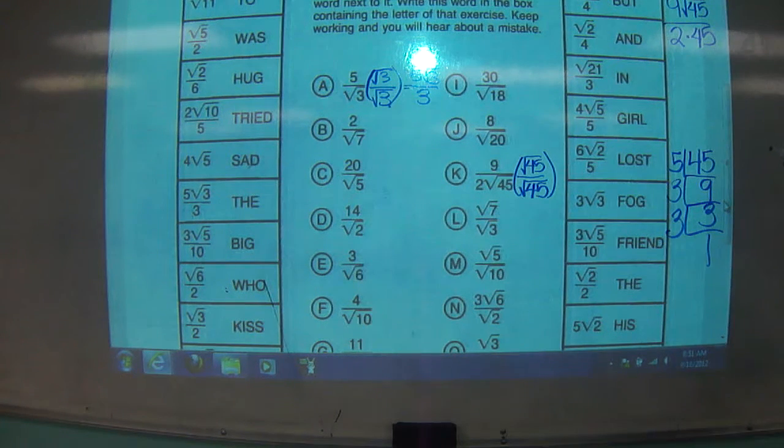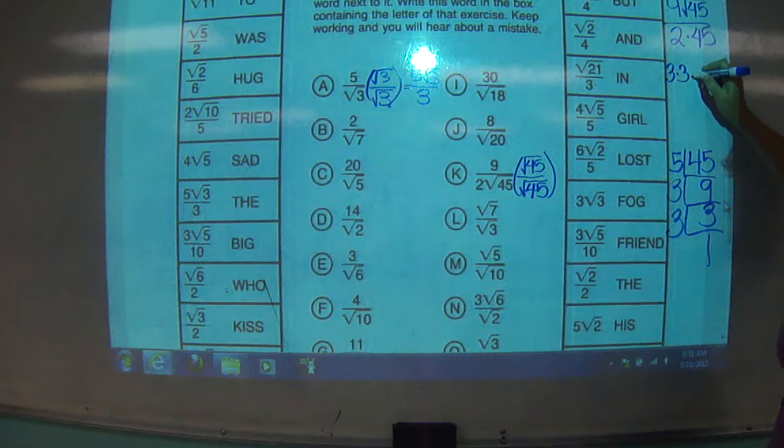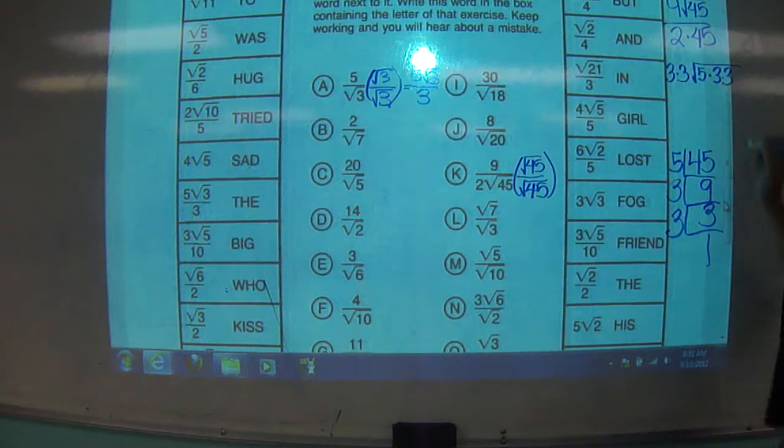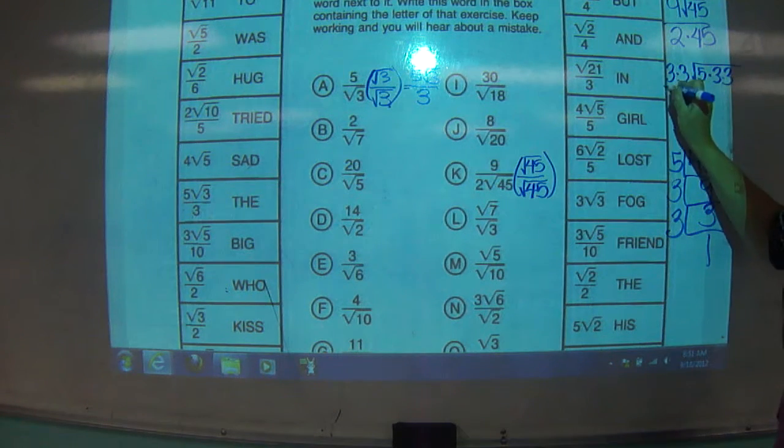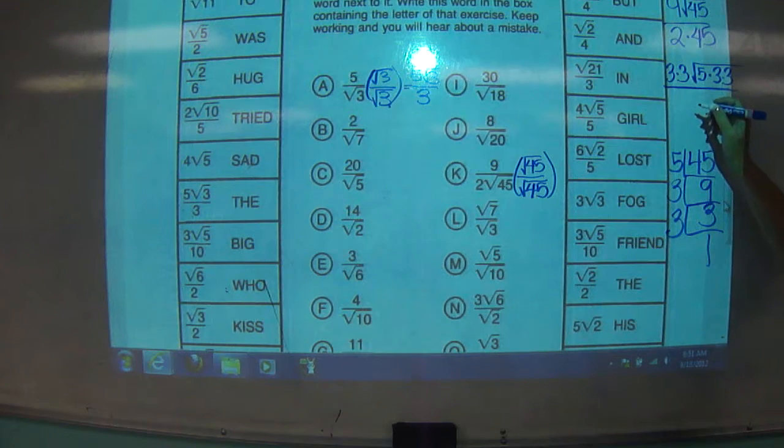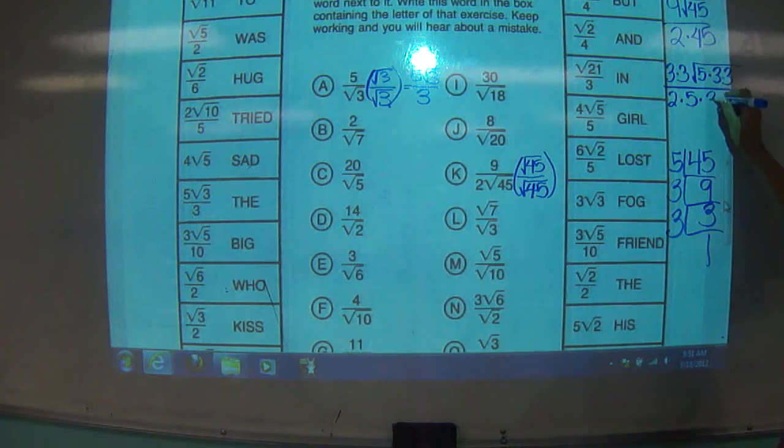So what we can do, 9 is 3 times 3 radical 5 times 3 times 3. And in the denominator, we have 2 times 5 times 3 times 3. Alright...